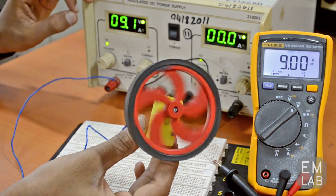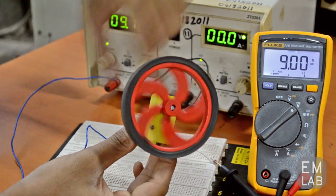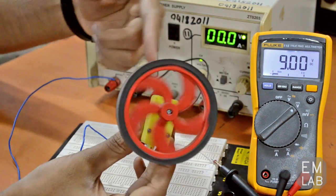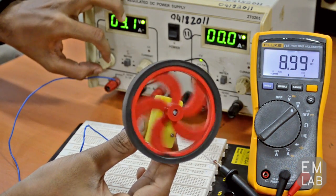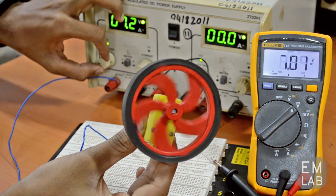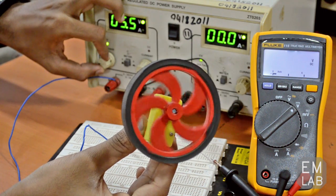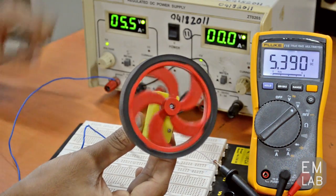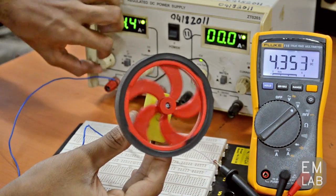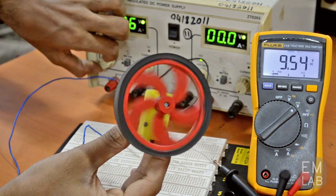This motor is connected to a regulated supply and I'm applying 9 volts. You can see the speed of the wheel. When I'm reducing the voltage, the back EMF will reduce and hence the speed will reduce. If I need to increase the speed, I have to increase the armature voltage.